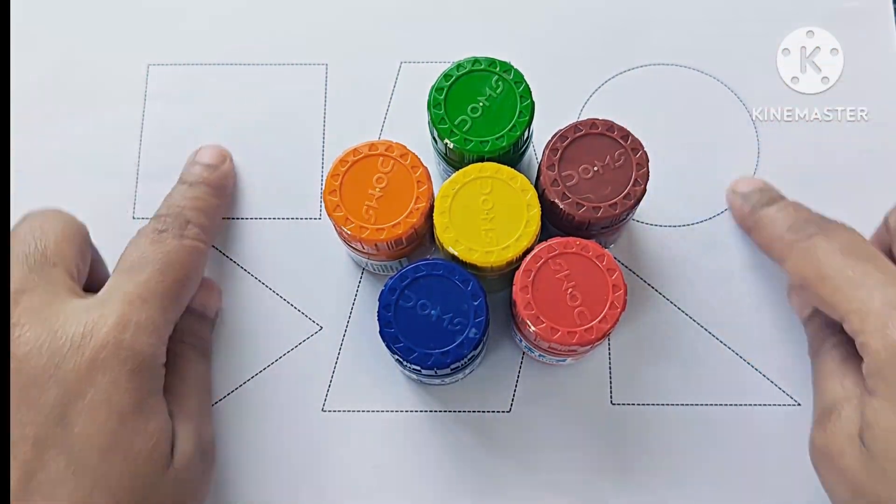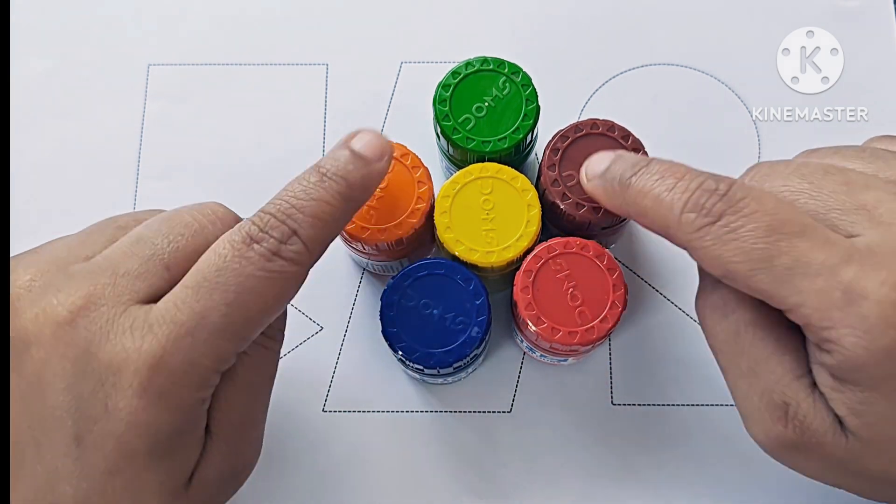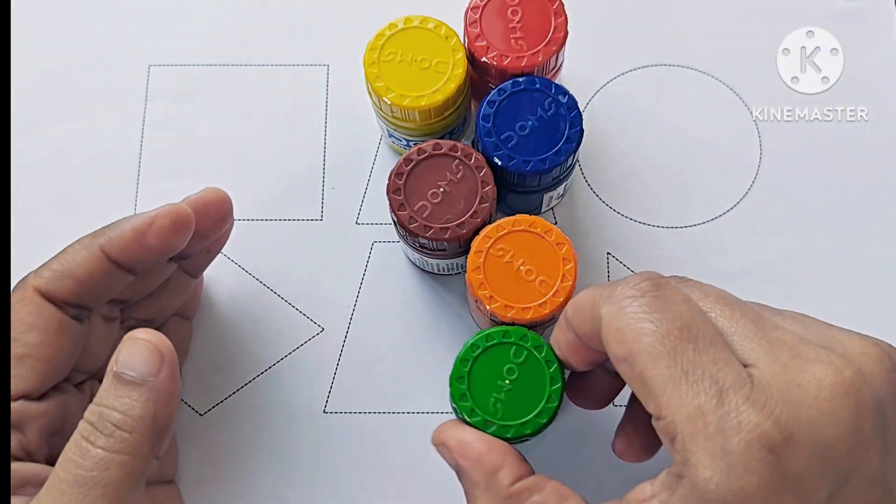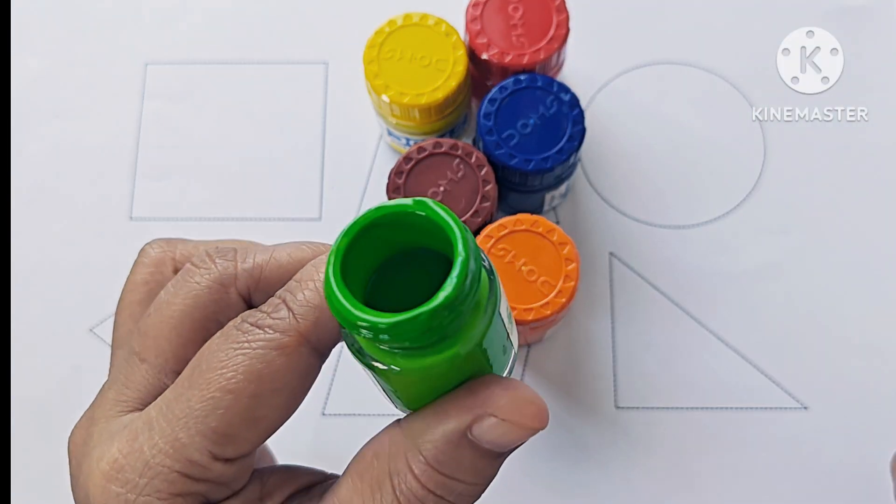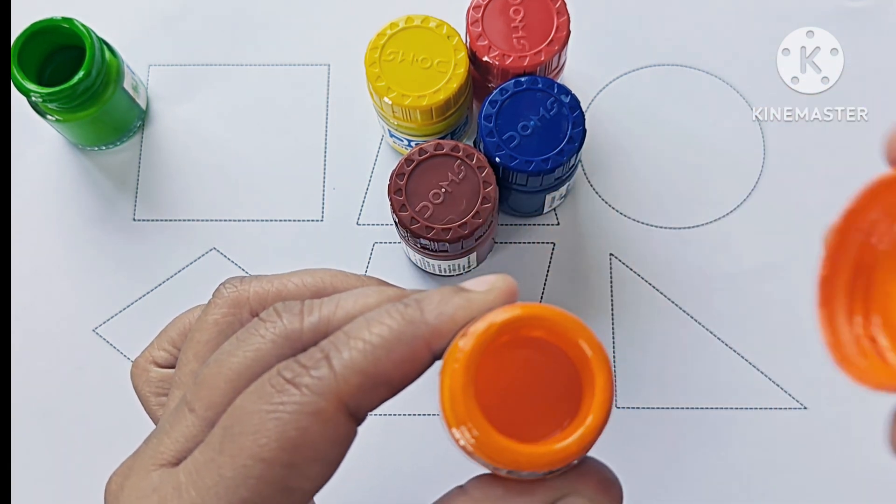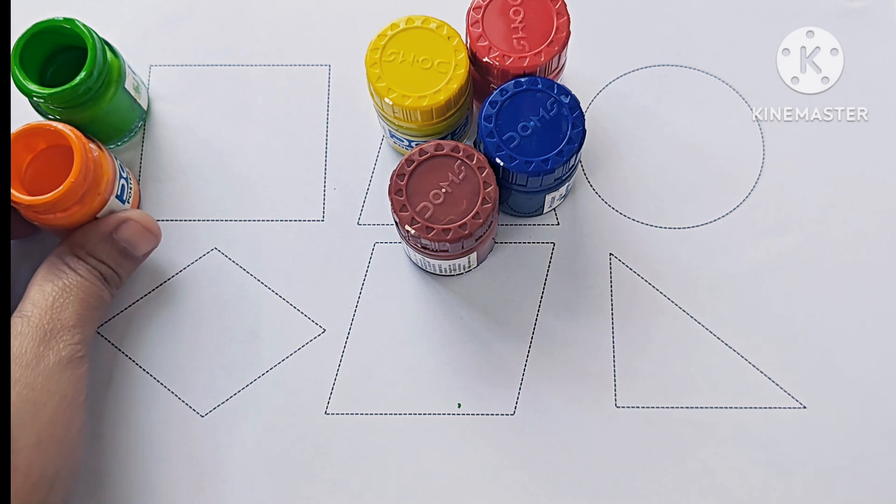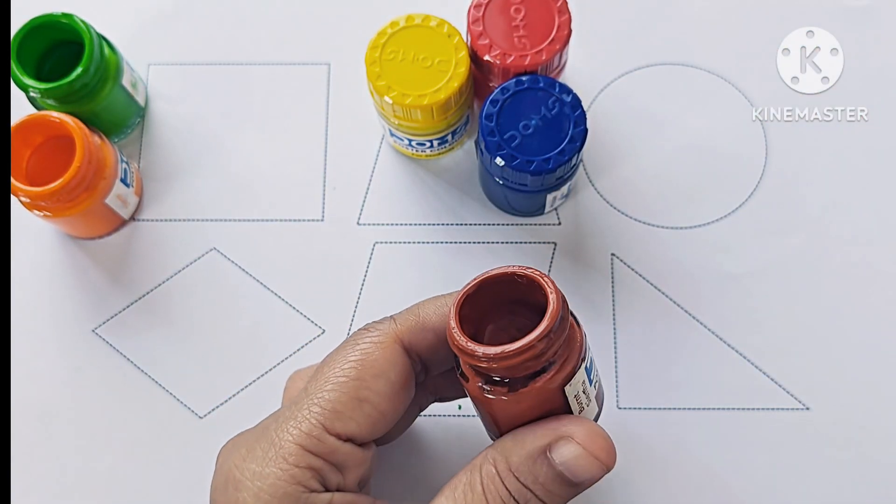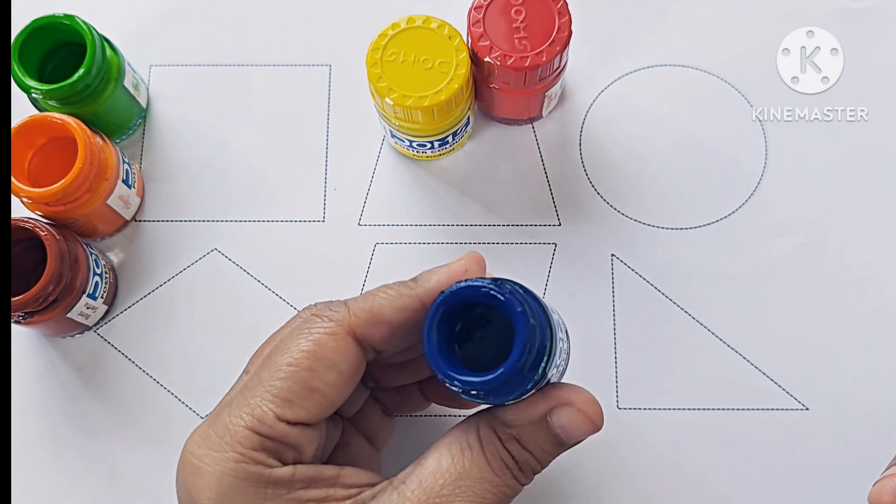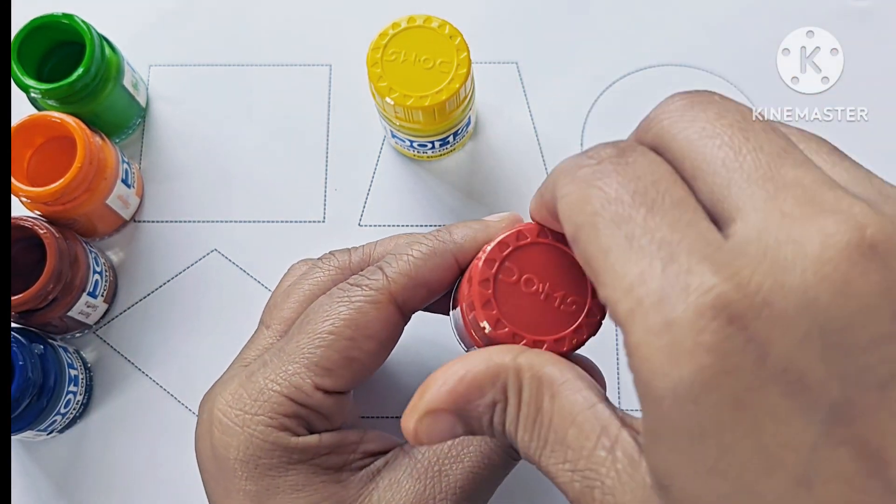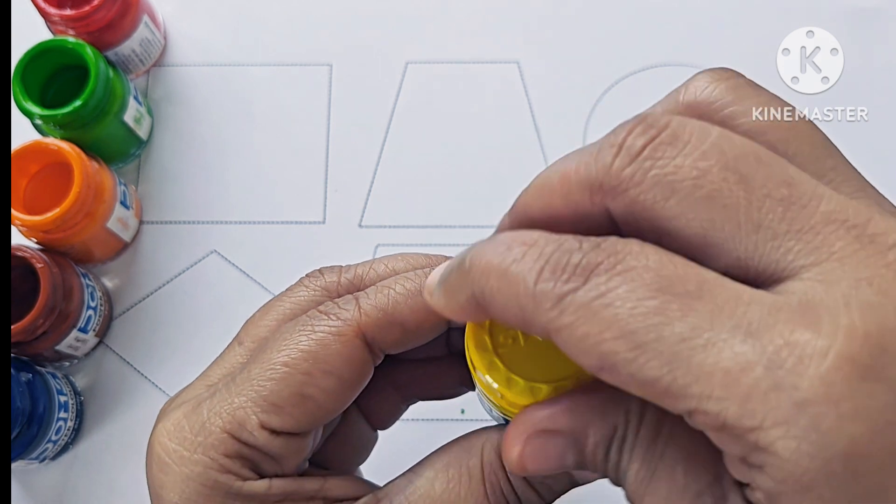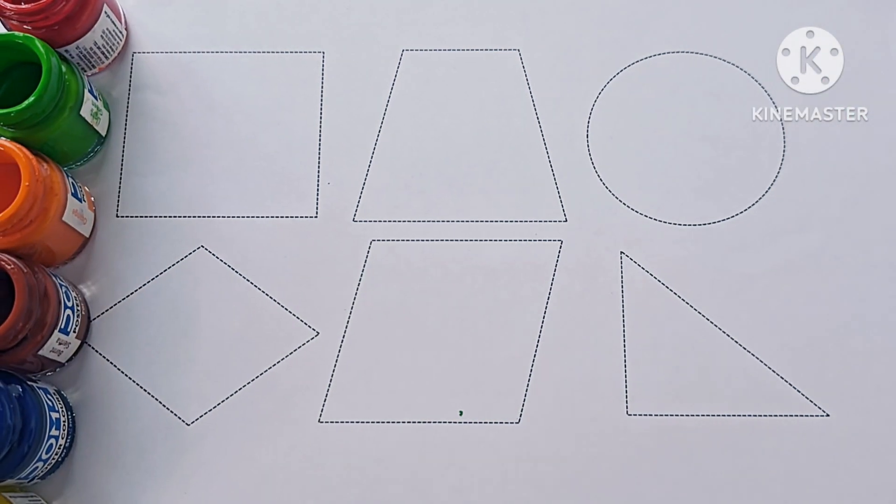Hello kids, let's learn some 2D shapes. These are our 2D shapes, and know about the color names. These are our colors: light green, orange, brown color, blue color, red color, yellow, black color.